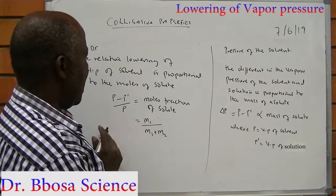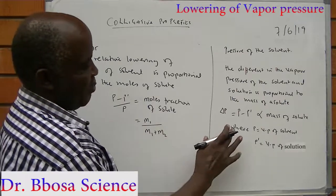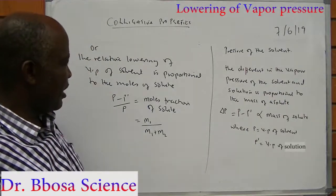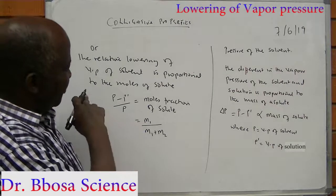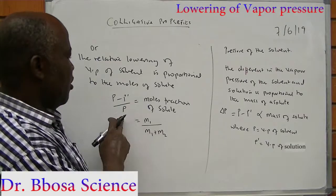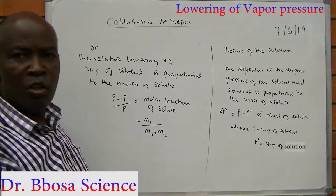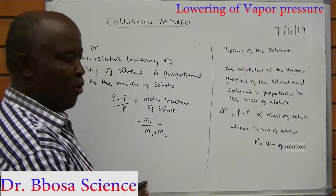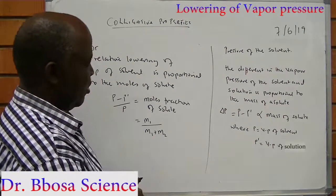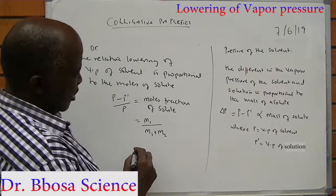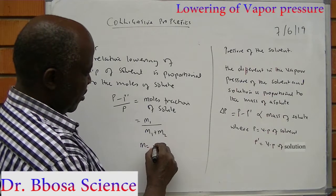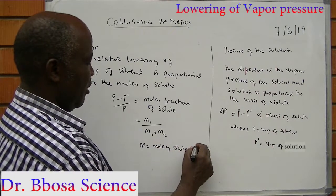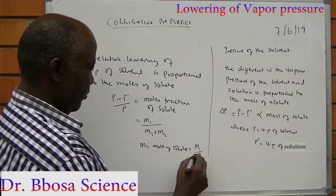P minus P-dash over P — where P is the vapor pressure of the solvent and P-dash is the vapor pressure of the solution — would be equal to the mole fraction of the solute. The mole fraction of the solute is equal to the moles of solute over the sum of moles of solute plus moles of solvent. M1 is the moles of solute, equal to m1 over MR1, where MR1 is the molecular mass of the solute.